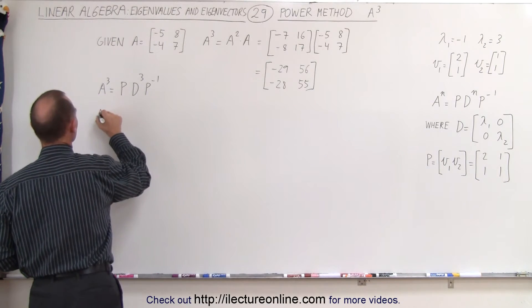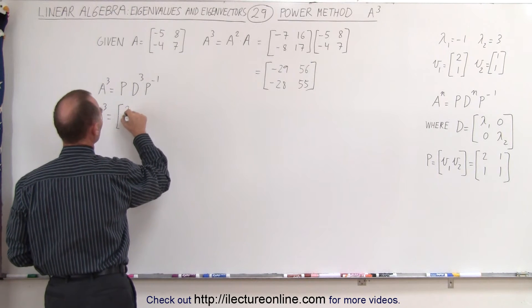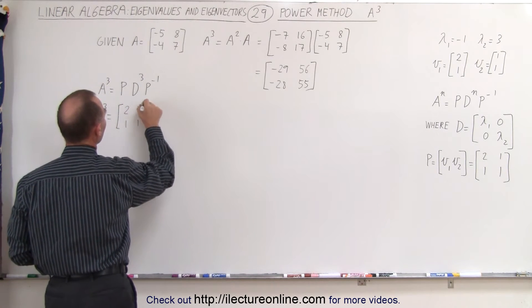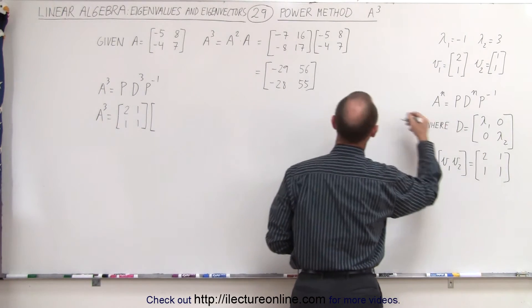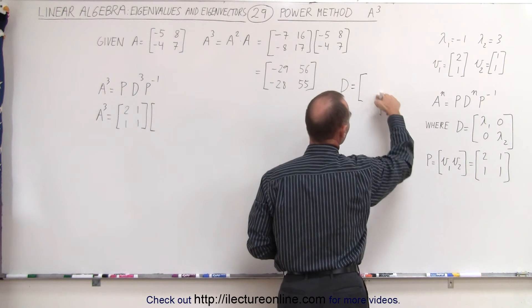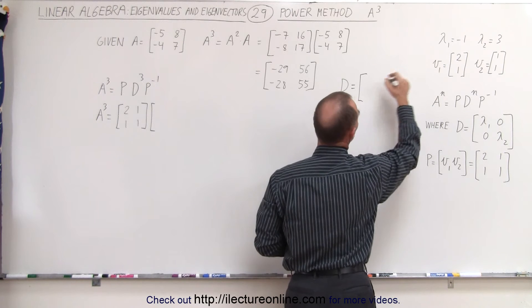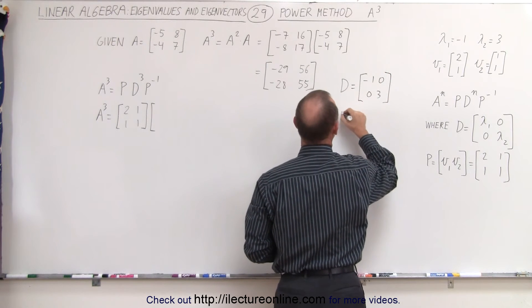So A cubed is equal to P, which is 2, 1, 1, 1. The diagonalized matrix cubed, now based upon the definition of the D matrix, D is then equal to the eigenvalues in the diagonal, which is negative 1 and 3.